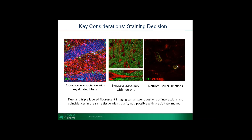Here are three examples. The first has GFAP in red — the astrocyte marker — and PLP for myelinated axons in green. The second is synaptophysin staining in green along with a neuronal marker in red, to let us look at synaptic load. And finally, in this muscle example, we have bungarotoxin and vesicular acetylcholine transporter to look at neuromuscular junction integrity.